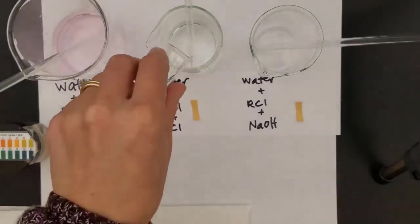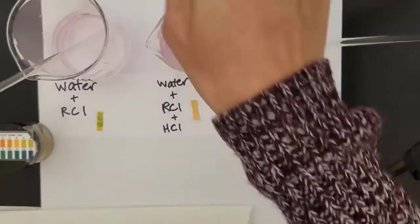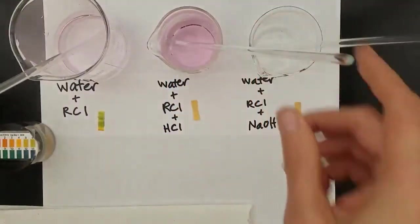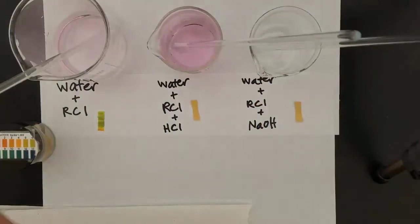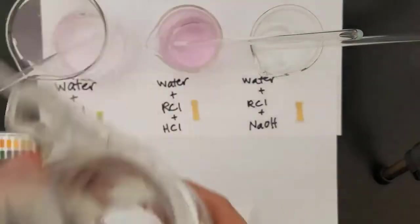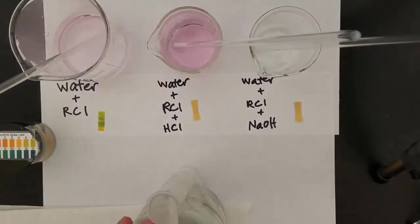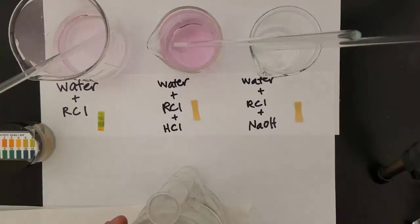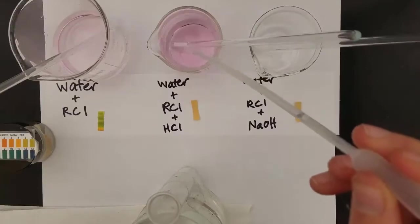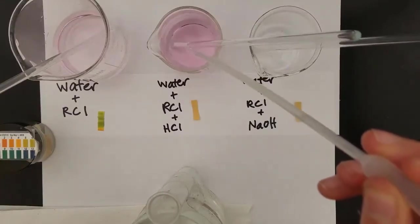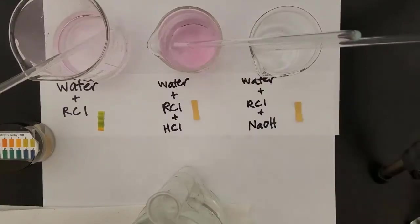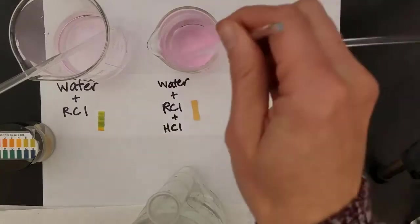For the next beaker, we're going to put the same water and indicator in, and for this time we're going to add some hydrochloric acid. Just a few drops of this should cause the pH to drop dramatically, and with that we should see at least a bit of a color change. So we add a few drops of that hydrochloric acid, and we'll stir it up to mix it.